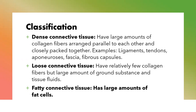Then we have the loose connective tissue. This type of tissue has relatively few collagen fibers, a large amount of ground substance and tissue fluid. And then the fatty connective tissues have large amounts of fat cells in them. So these are some of the ways in which connective tissue can be classified.